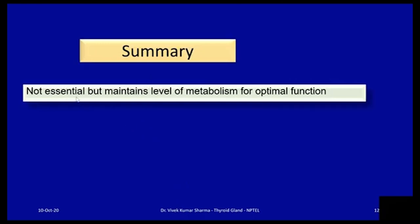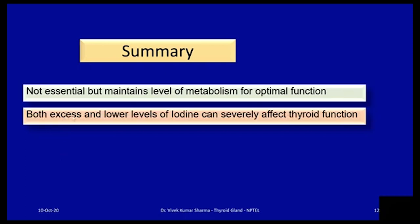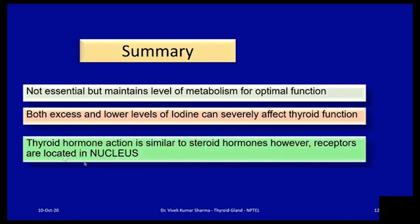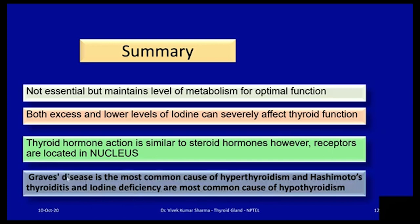In summary: although the thyroid gland is not essential for life, it maintains the level of metabolism for optimal body functioning. Both excess and low levels of iodine can severely affect thyroid function. Thyroid hormone action is similar to steroid hormones, but receptors are located in the nucleus. Graves' disease is the most common cause of hyperthyroidism, while Hashimoto's thyroiditis and iodine deficiency are the most common causes of hypothyroidism. Thank you very much for the patient listening and watching this lecture.